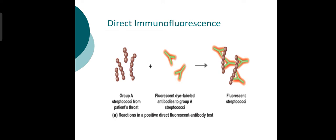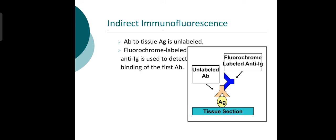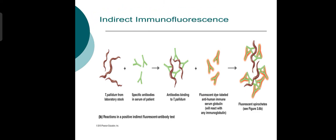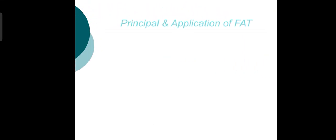In a positive direct fluorescent antibody test, the direct immunofluorescence enables visualization of the labeled antigen. The tissue is labeled and the anti-immunoglobulin is used to detect binding in the indirect fluorescent antibody method.